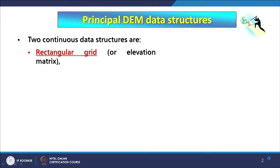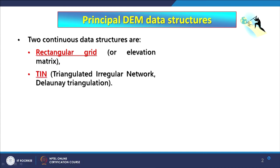Both raster and TIN are continuous data structures. Raster, which we have discussed sufficiently, is a two-dimensional matrix and is continuous. TIN, instead of using a square unit as in raster, uses a triangle as its unit. The shape and sizes of these triangles are adaptable to relief changes, and that is why the term 'irregular network of triangles' is used.